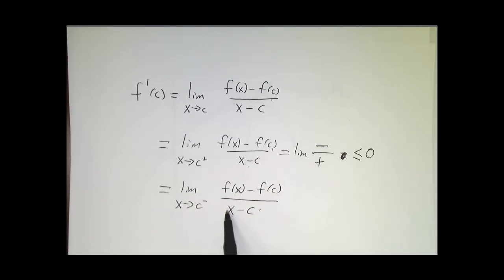On the other hand, on the other side, f of x minus f of c is still negative. But if x is less than c, then x minus c is also negative. Negative divided by negative is positive. So the limit has to be positive.